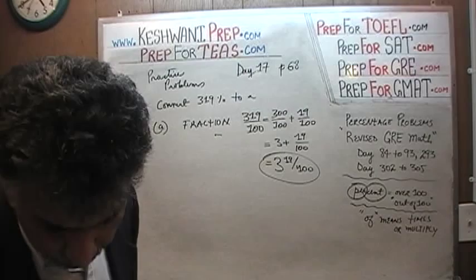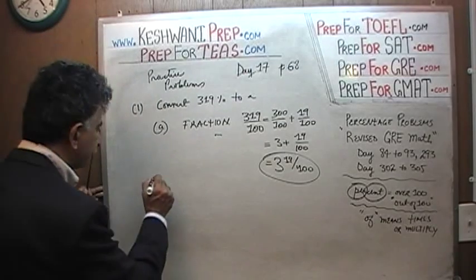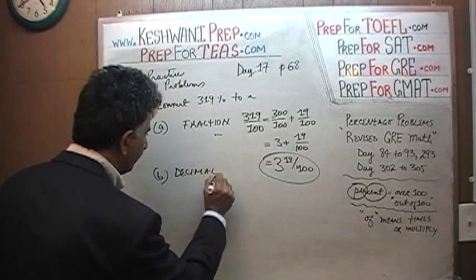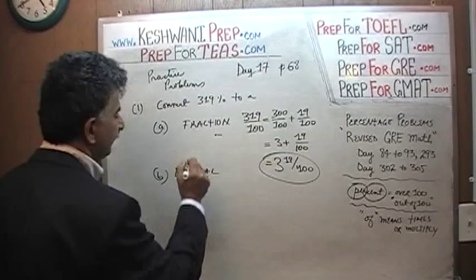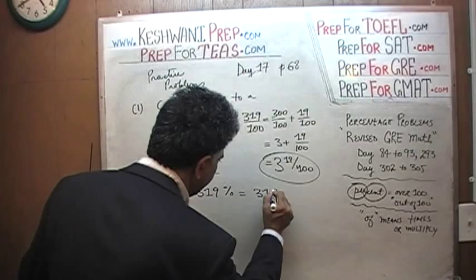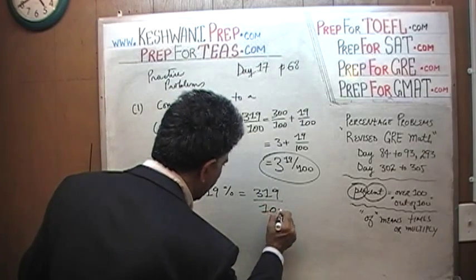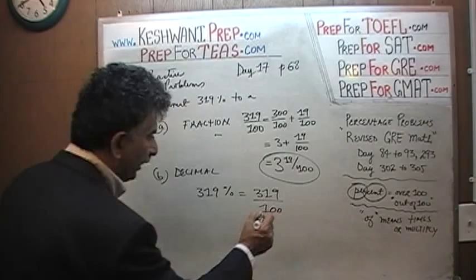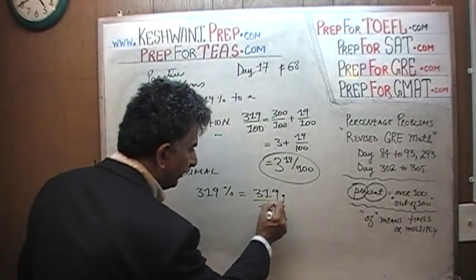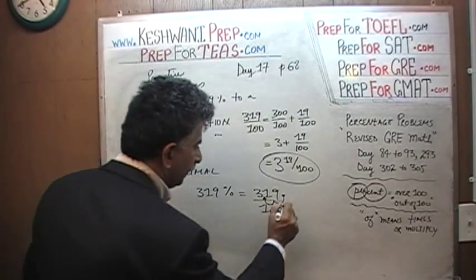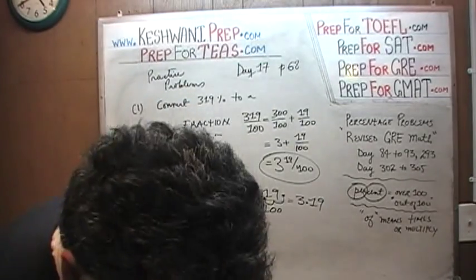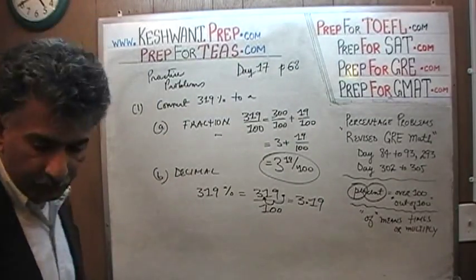The next part asks us to convert the same thing into decimal. We just learned it: 319% is the same as 319 divided by 100. And what happens when you divide by 100? We take our decimal point and move it to the left two places. When we do that, the answer is 3.19. That's it, we're done with this one.